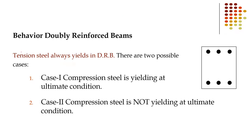In doubly reinforced beams, the tension steel always yields. There are two possible cases: one is where the compression steel is also yielding at the ultimate condition, and the second is where the compression steel is not yielding at the ultimate condition.